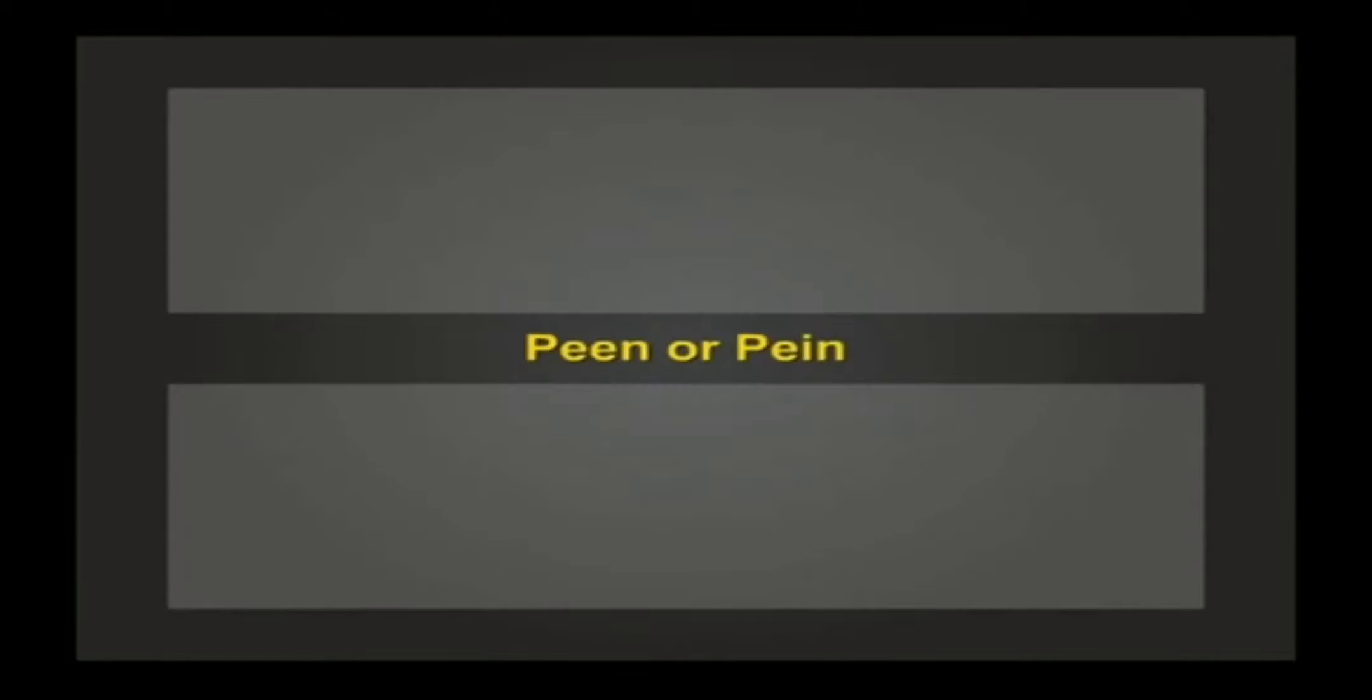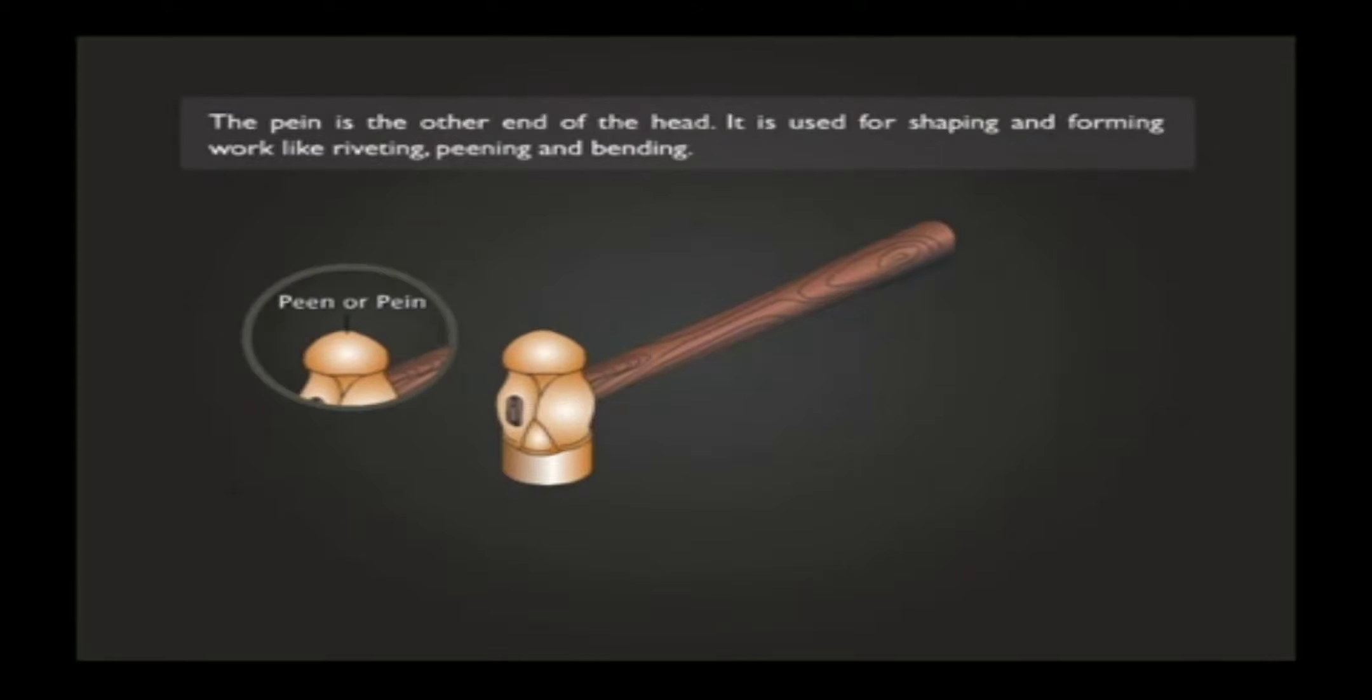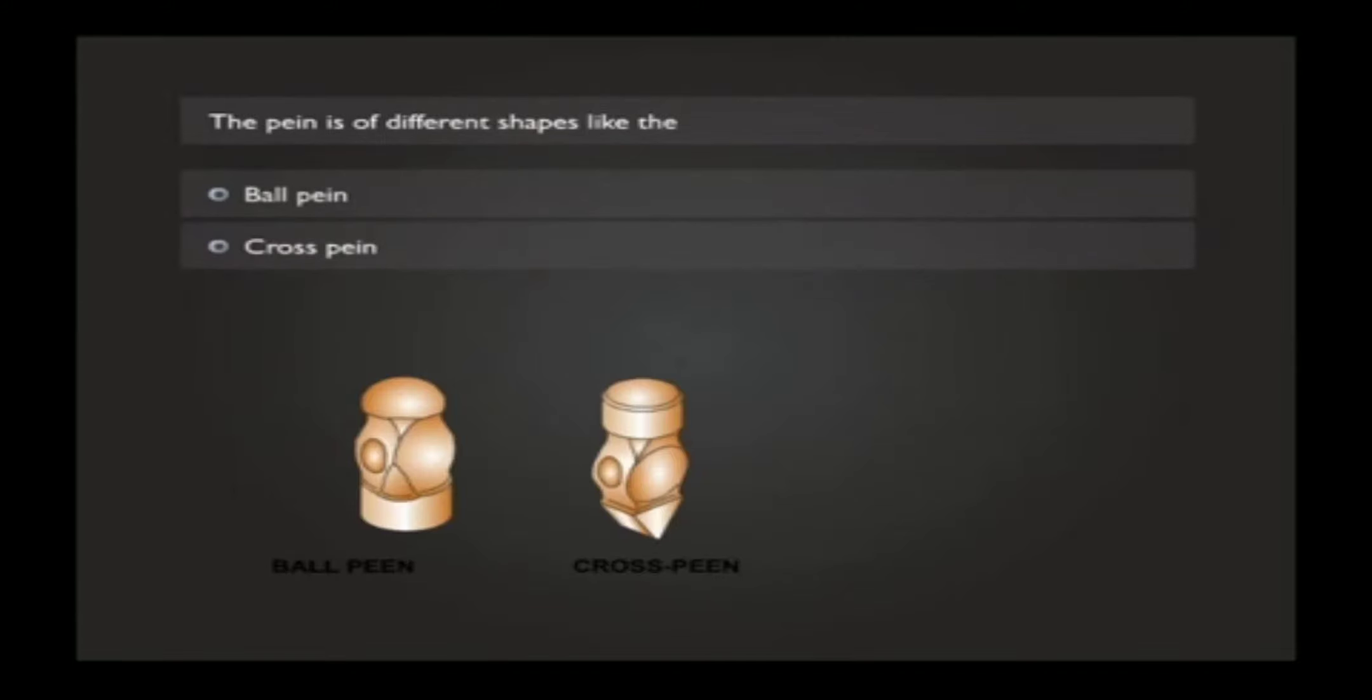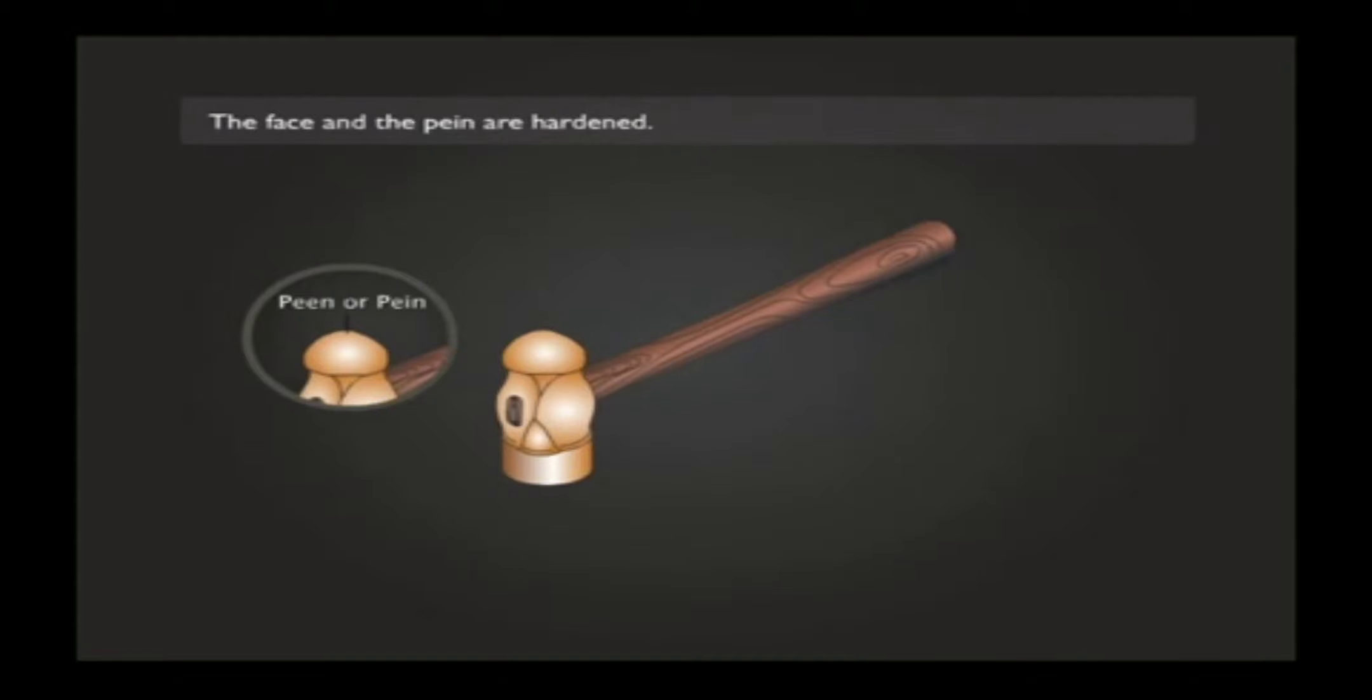The peen is the other end of the head. It is used for shaping and forming work like riveting, peening, and bending. The peen is of different shapes like the ball peen, cross peen, and straight peen. The face and the peen are hardened.